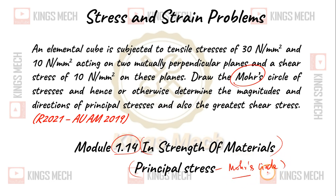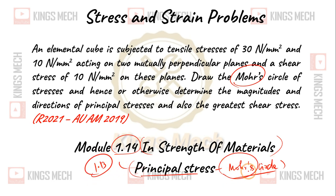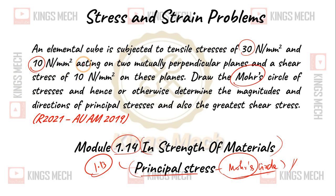Mohr circle is not directly used to solve the problem — module number 1.13 should be checked first. The question is: an elemental cube is subjected to a tensile stress of 30 N/m² and 10 N/m², acting on two mutually perpendicular planes.